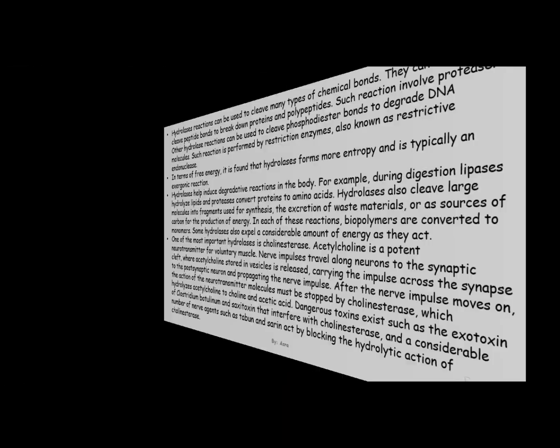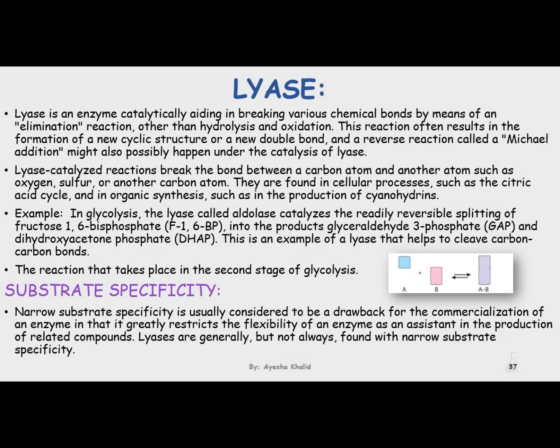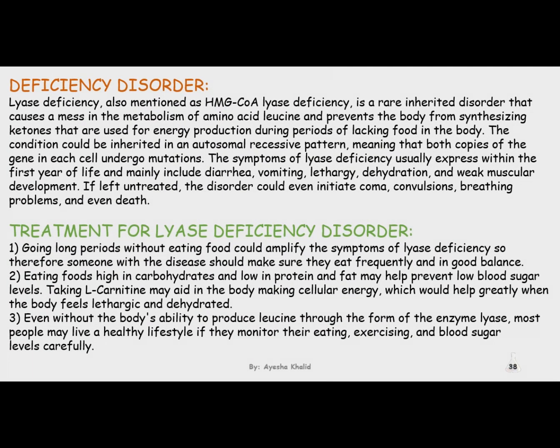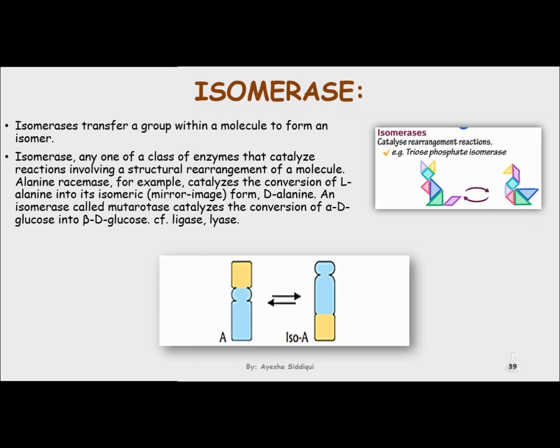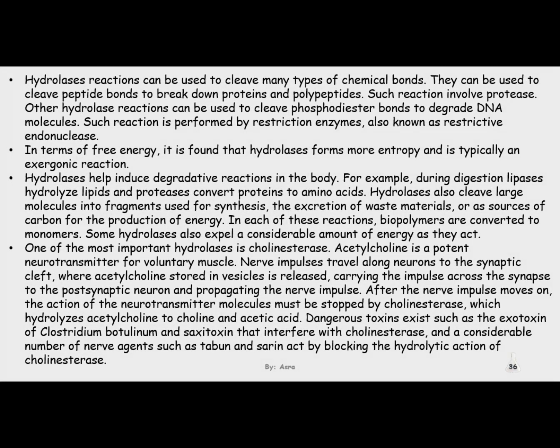The sixth subclass of hydrolases is the ester-hydrolyzing enzymes, grouped into phosphatases and miscellaneous ester hydrolases. Phosphatases include phosphomonoesterase, phosphodiesterase, phosphohydrolase, pyrophosphatase, nucleotidase, and nucleosidase. Miscellaneous ester-hydrolyzing enzymes include cholinesterase and sulfatase.